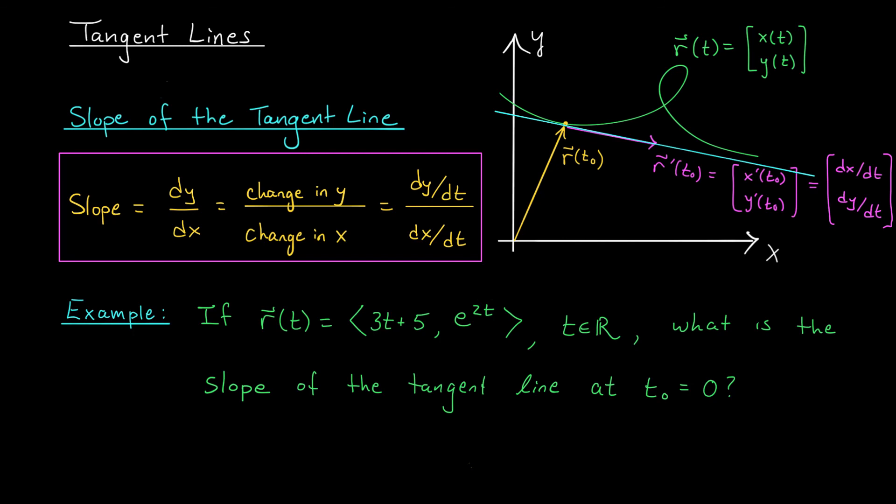Suppose we're dealing with that same vector function, r(t), from the last slide. I wonder, at t₀ equals 0, what's the slope of our tangent line? Well, according to our formula, we can figure out the slope if we know dy/dt and dx/dt. Effectively, we need to know the entries of our derivative vector, r'(t₀). In this case, t₀ is 0, the same as before. And on the last slide, we actually figured out this derivative. We found that r'(0) was the vector ⟨3, 2⟩. Therefore, the slope of our tangent line is the change in y with respect to t, 2, divided by the change in x with respect to t, 3. We have a slope of 2/3.